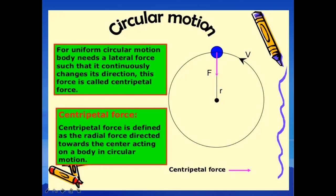Circular or uniform circular motion is not possible without centripetal force. For uniform circular motion, a body needs a lateral force which constantly changes its direction of velocity. This force is called centripetal force, and the direction of centripetal force is always towards the center of the circular path.